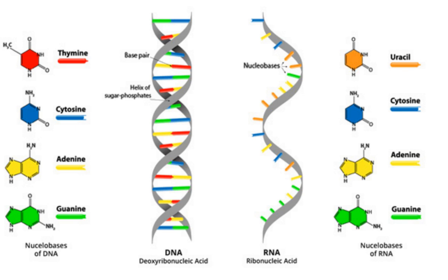is that the information contained on one of those strands was essentially redundant with the information on the other. DNA could be replicated and faithfully passed on from one generation to another simply by separating the two strands and using each as a template for the synthesis of a new strand.